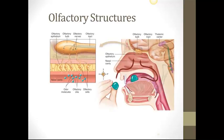Olfactory structures: gas molecules stimulate the olfactory cells in the nasal epithelium. Sensory information is conducted along nerves in the olfactory bulb and the olfactory tract to the sensory processing centers of the brain, which you can see here at the thalamic center of the brain.